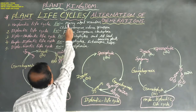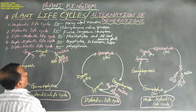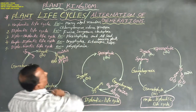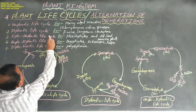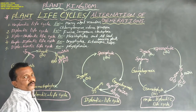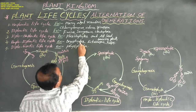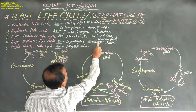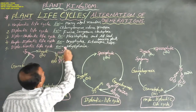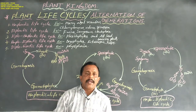Haplontic life cycle is seen in many algal members such as Chlamydomonas species, Volvox, and Spirogyra. Diplontic life cycle is seen in Fucus, Sargassum, and Cladophora. Haplo-diplontic life cycle is seen in Fucus and all seed-bearing plants such as gymnosperms and angiosperms. Haplo-diplontic life cycle is also seen in bryophytes and some other members such as Ectocarpus and kelps, that is Laminaria. Diplo-haplontic life cycle is seen in Polysiphonia. These are the examples for different types of plant life cycles.